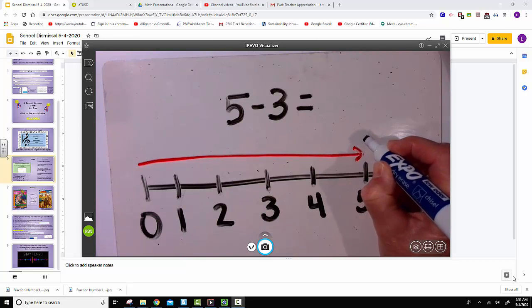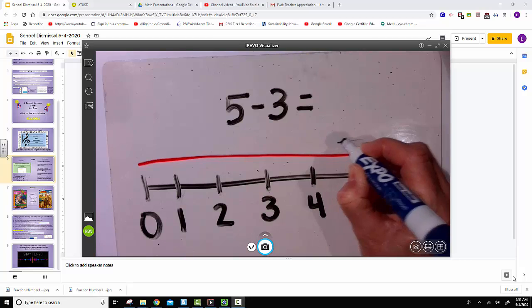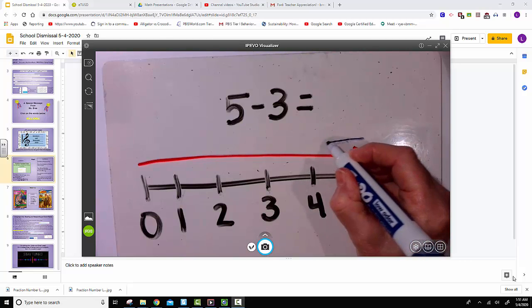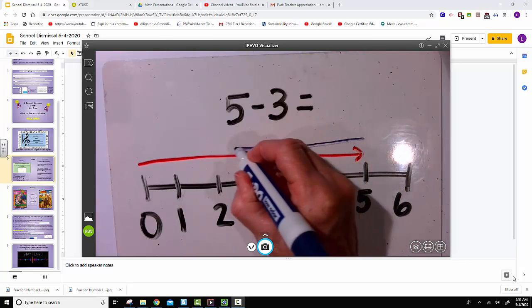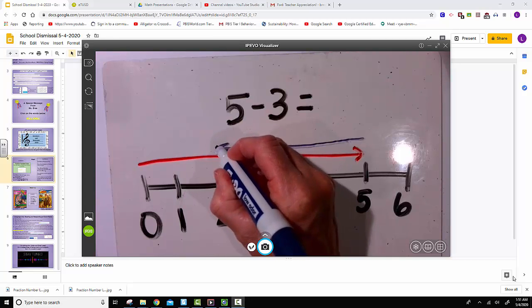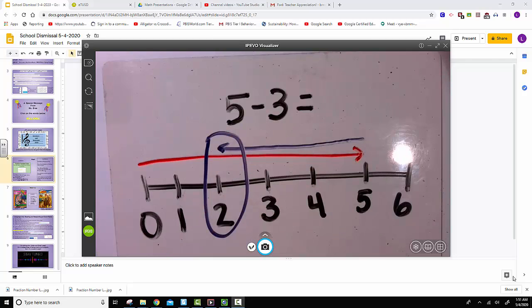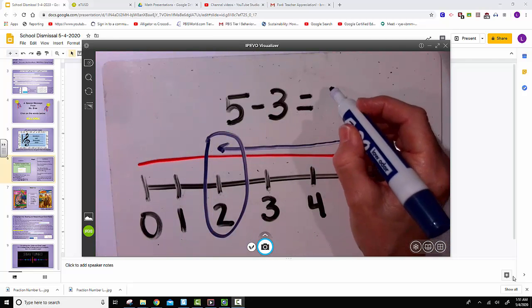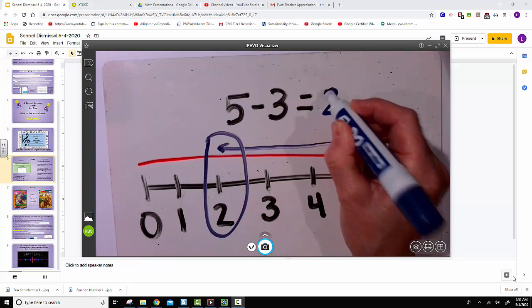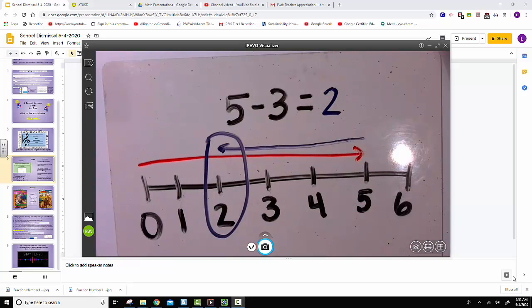So we move backwards 1, 2, 3 spaces. We find that we're at the number 2. So 5 minus 3 is 2. And that's one example of how we use a number line for subtracting.